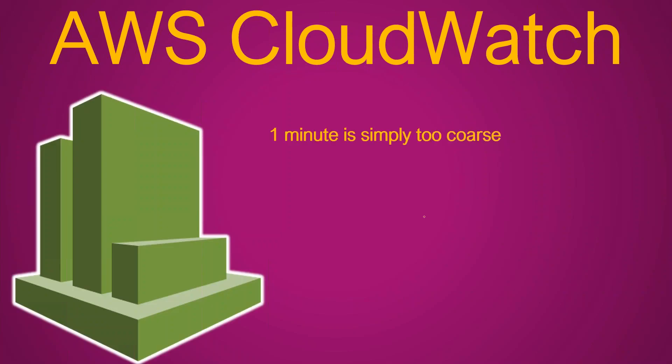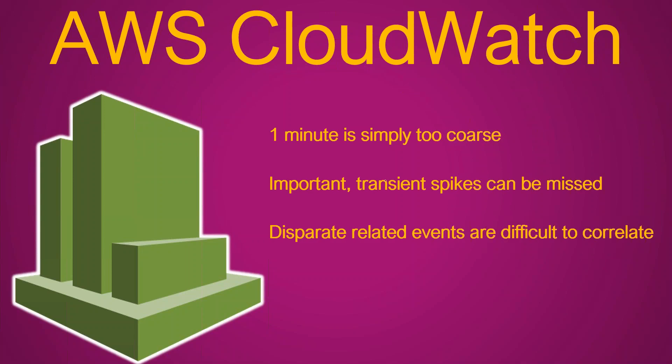The reason is that 1 minute is simply too coarse — you need more detailed information than a 1-minute alarm can give you. Transient spikes in your system will be missed by the time the aggregated data is sent to the monitoring system. All these different events are happening across your systems and they are correlated, so when troubleshooting you need to know what is happening on different systems at the same point in time. Ultimately this affects your mean time to recovery, leading to recovery times unacceptable to your clients.